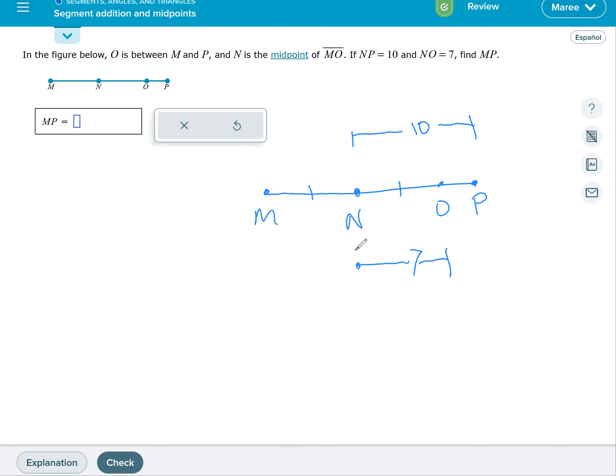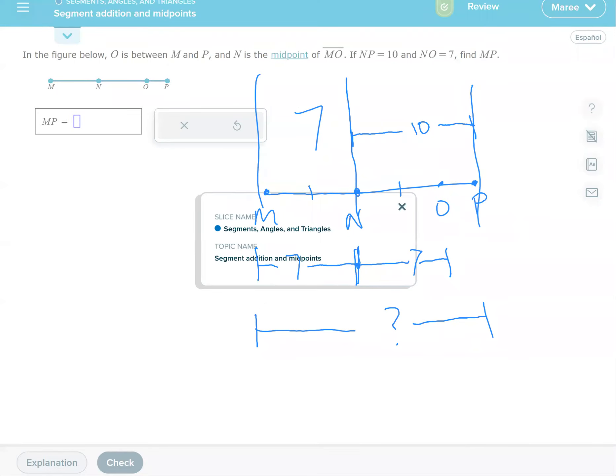And we just showed that NO equals MN. So I'm going to go ahead, put that in there too, because that's something extra that I know that I can add to it. So find MP. So basically they're saying we need this whole thing. So I know that from here to here is 10, from here to here is seven, and I can add those together to get 17.